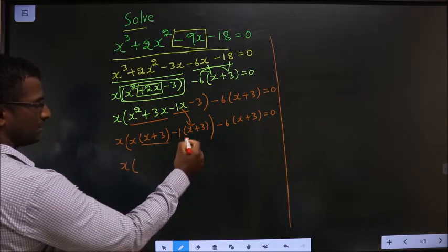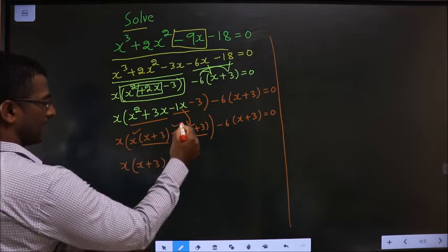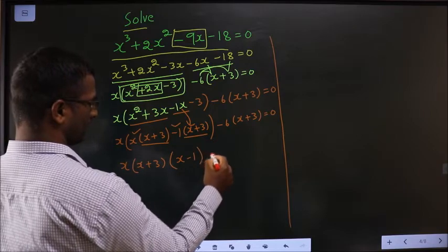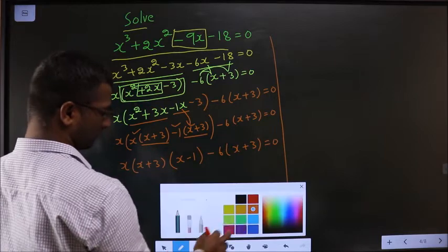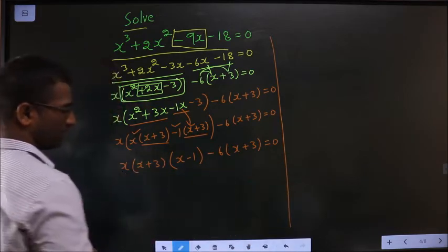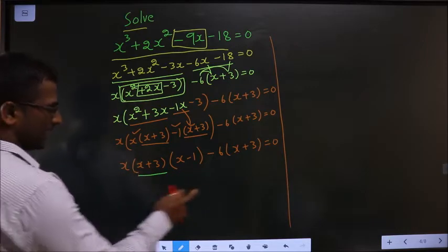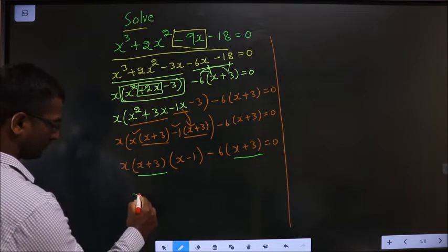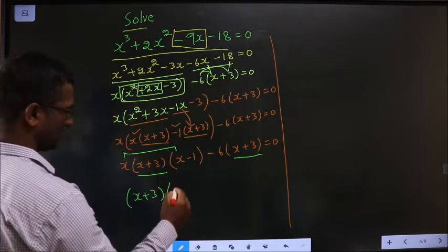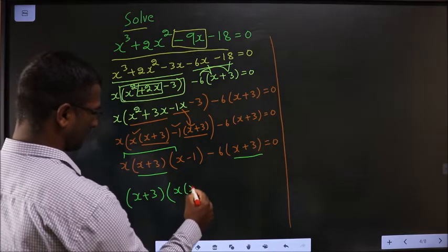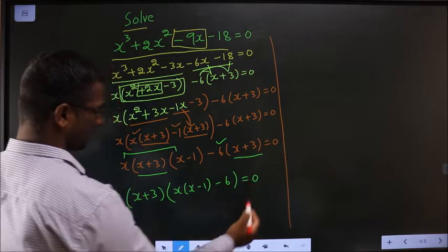Now take x plus 3 common, so left with x and minus 1, minus 6 times x plus 3 equal to 0. Now looking at it, what will be our next step? Take x plus 3 common. So what do I get? I am left with these two here, and here left with minus 6 equal to 0.